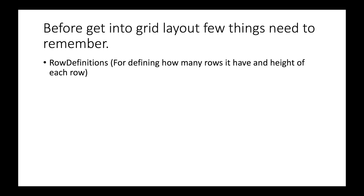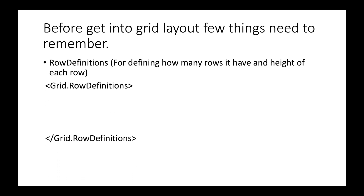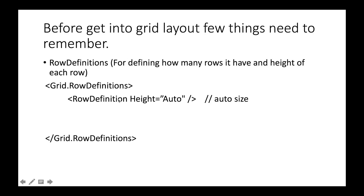Before jumping to the grid, you need to learn a few things. The first is row definition — a tag where you define the number of rows and the height of each row. The first property is 'auto', which means the row will adjust its height according to the content placed in that row.